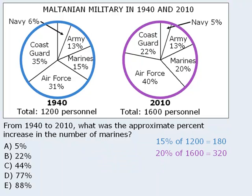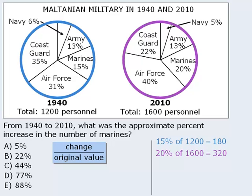In the arithmetic module, we learned two ways to calculate percent change. Let's use the method where we convert a fraction to a percent. The change in the number of Marines from 1940 to 2010 is 140, since 320 minus 180 equals 140.